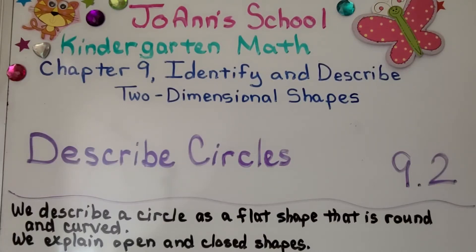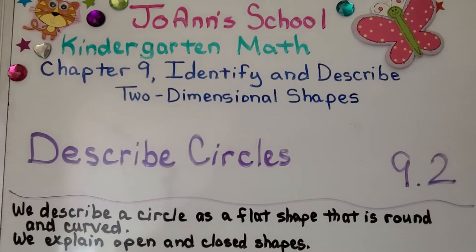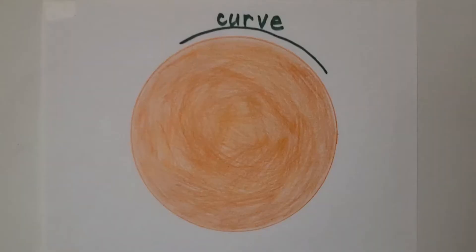Lesson 9.2: Describe Circles. We describe a circle as a flat shape that is round and curved. We explain open and closed shapes. Here we have a big orange circle. We can use our finger to trace around this circle.